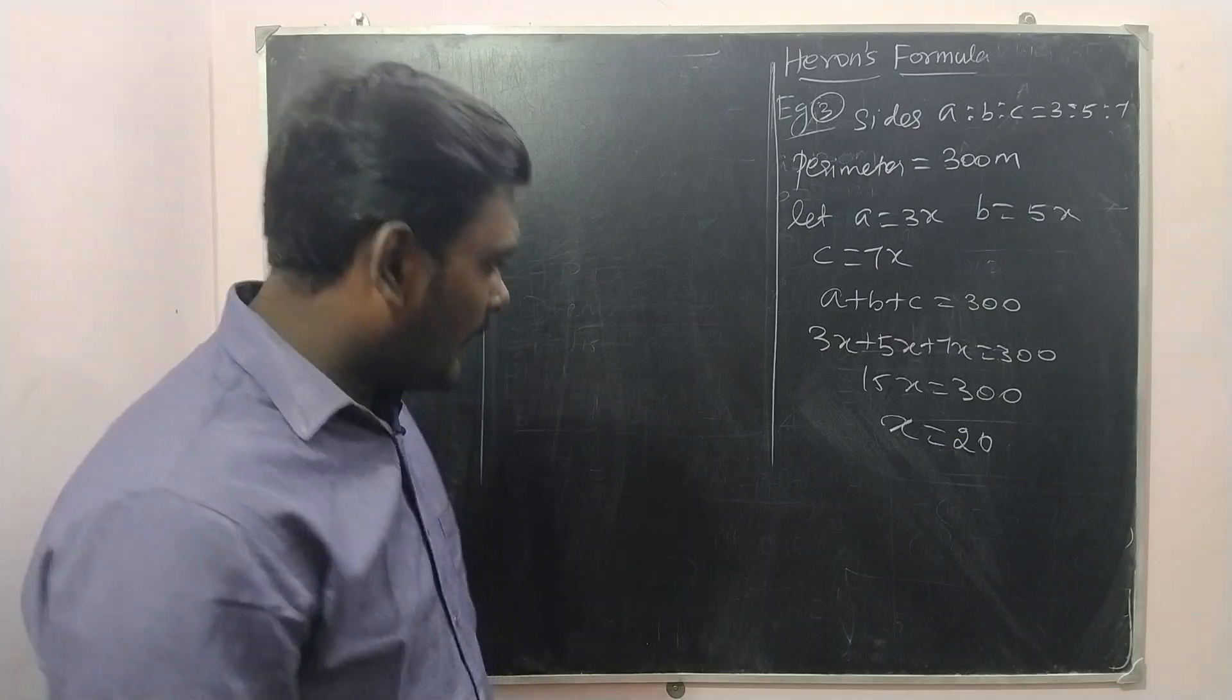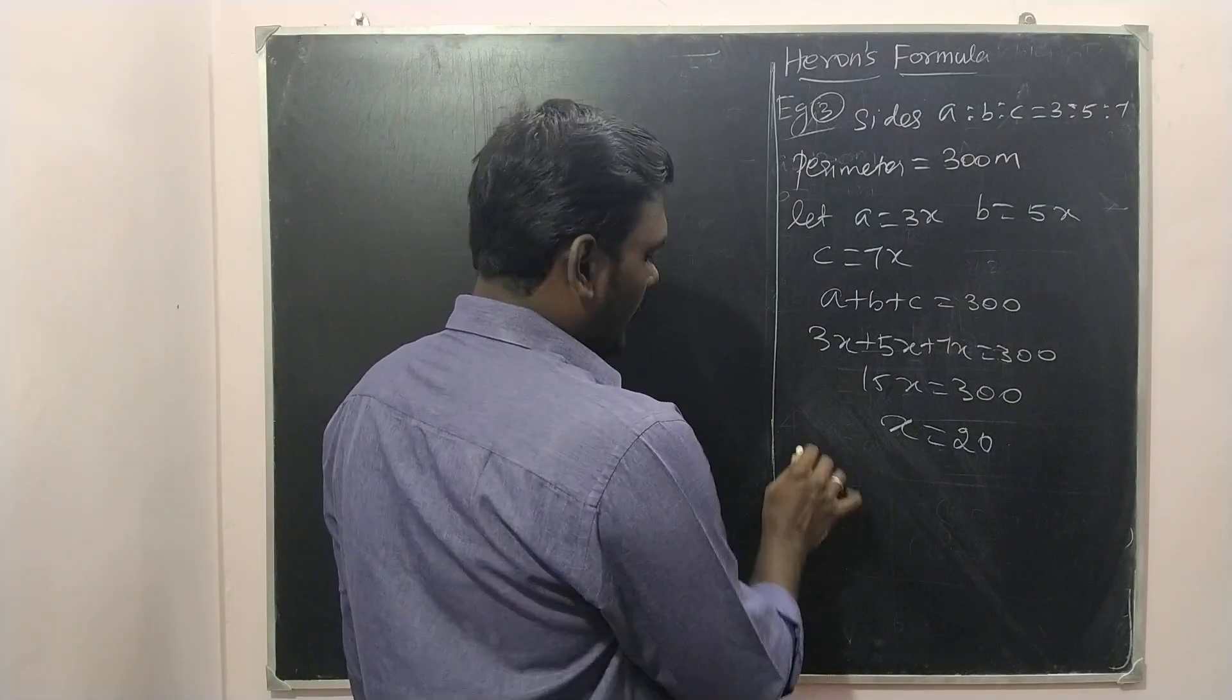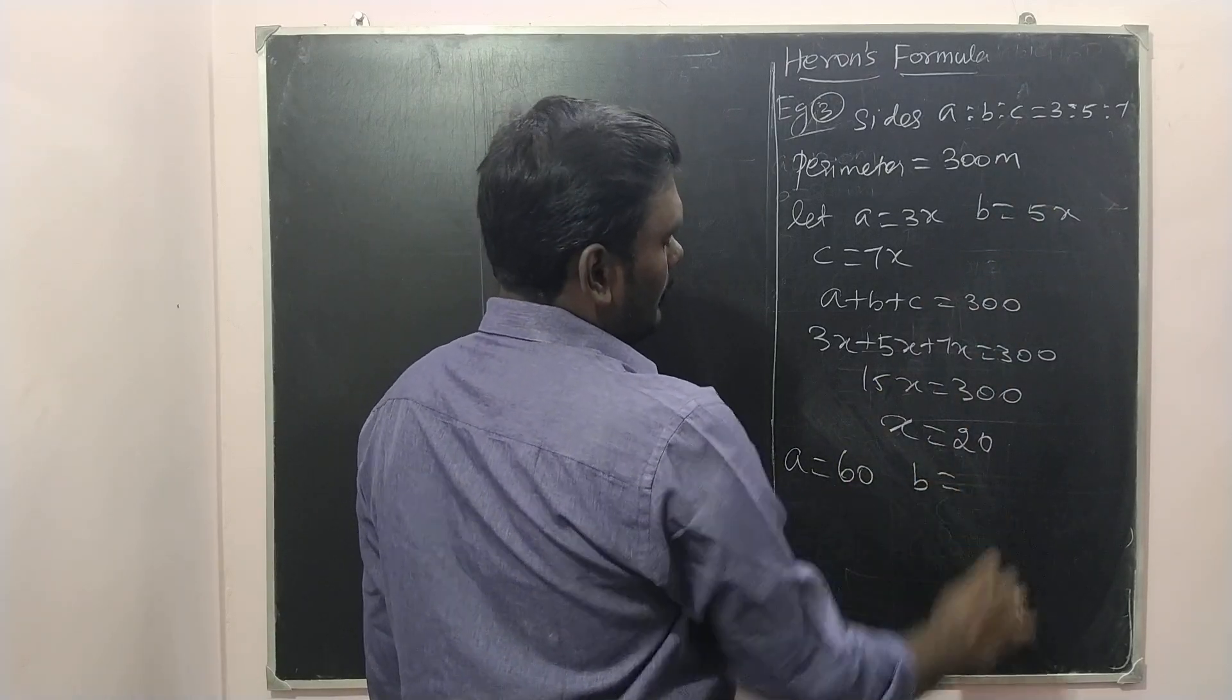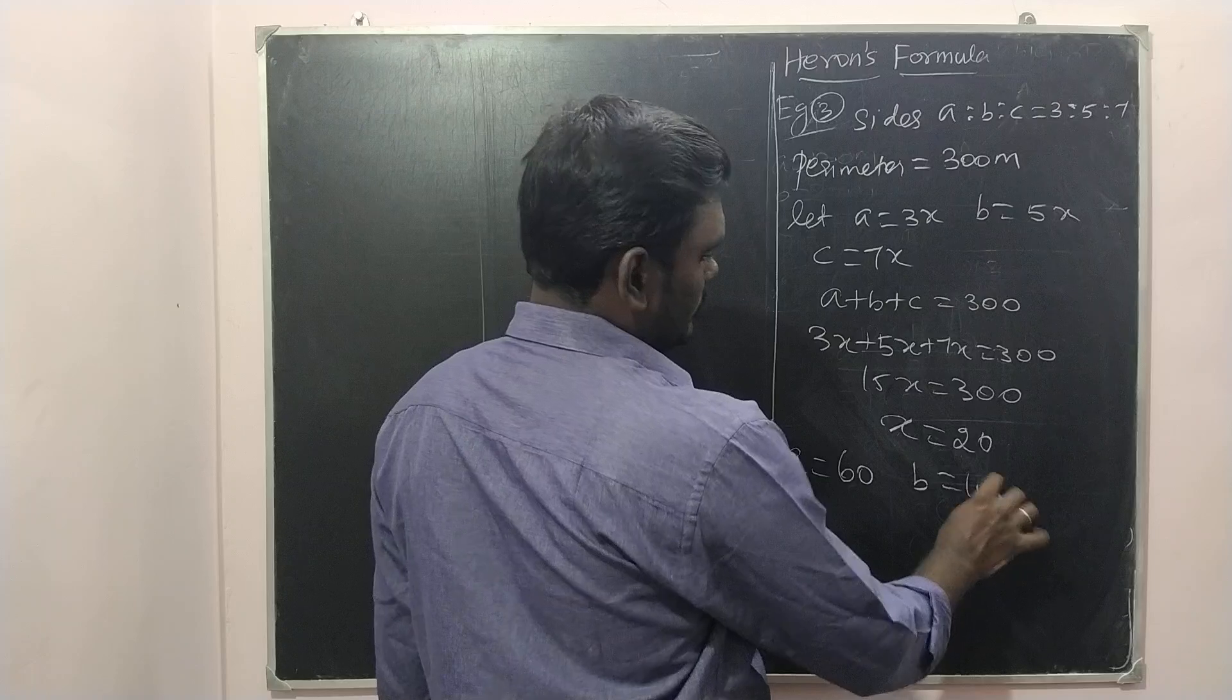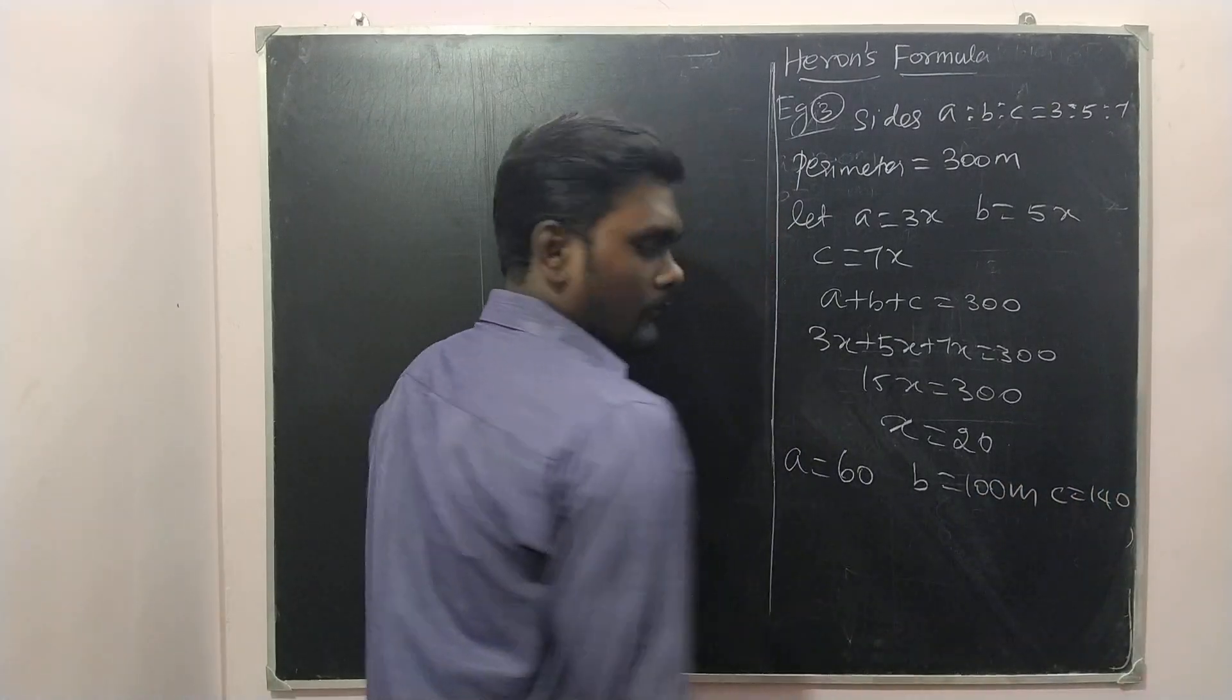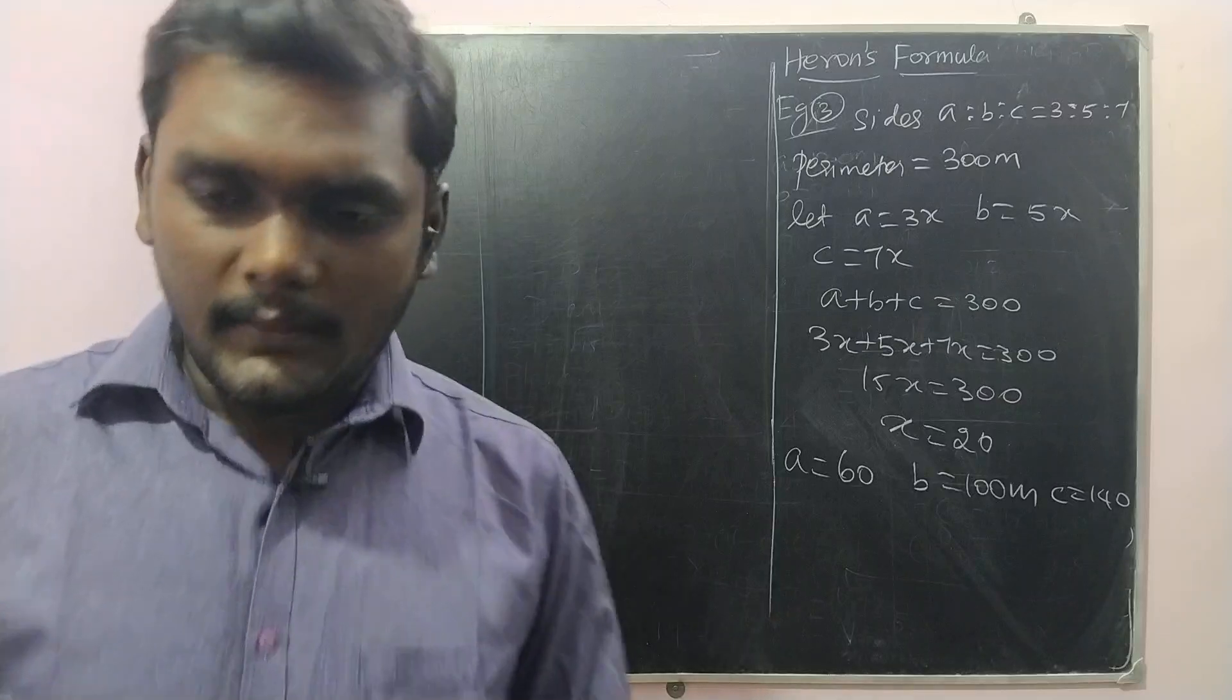When x is 20, how much is the length of a? 3 times 20 are 60. b is, come on, answer? Answer 100.